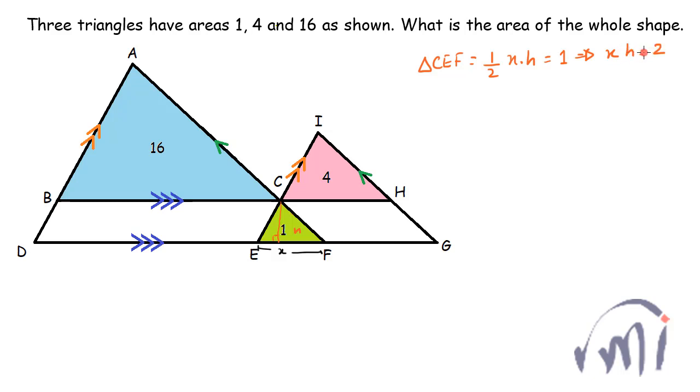Since the triangles CEF and ICH are similar triangles, and we know the ratio of the areas of two similar triangles is in the ratio of squares of their sides, that means the ratio of the areas of triangle ICH and the area of triangle CEF, which is 4 to 1, will be in the ratio of the squares of their bases.